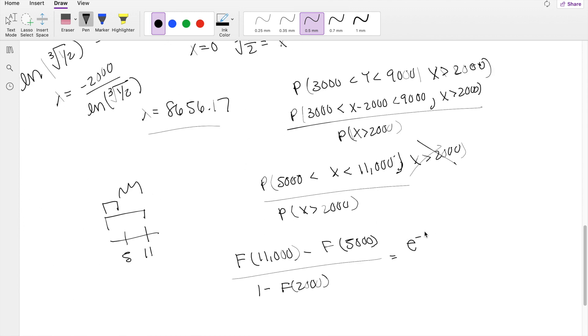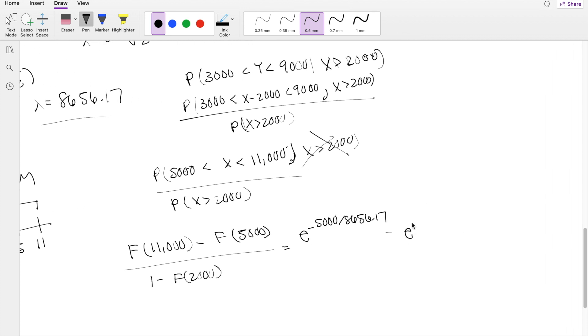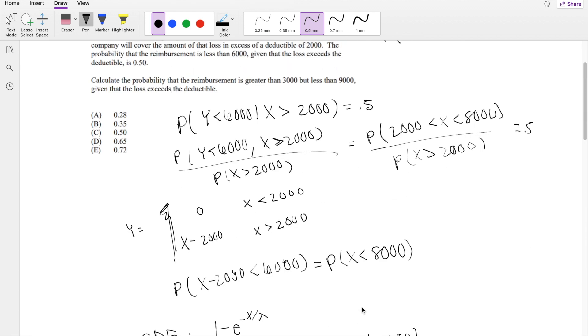So that's e to the negative 5,000 divided by lambda, which is 8656.17, minus the upper limit, e to the negative 11,000 divided by 8656.17, divided by 1 minus F of 2,000. So that's 1 minus minus, so it just becomes positive, e to the negative 2,000 over 8656.17. Let me plug that into my calculator real quick. So this is equal to 0.3535 something, which is our answer B.